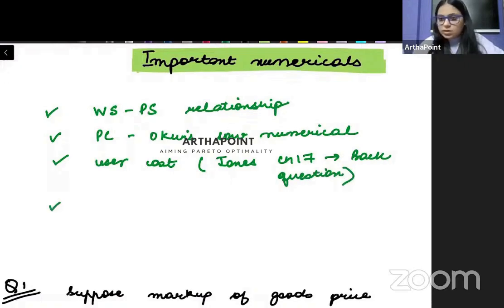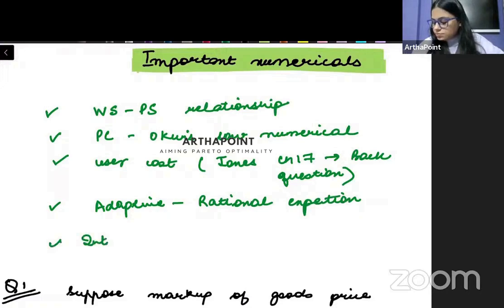And at last, you can be given a very short numerical on adaptive rational expectation, which is also very important. One last thing: you can be given a numerical on intertemporal budget line coming from consumption theory.